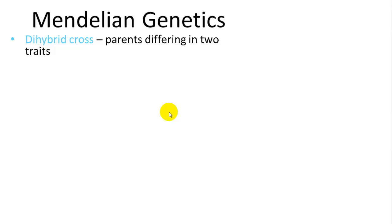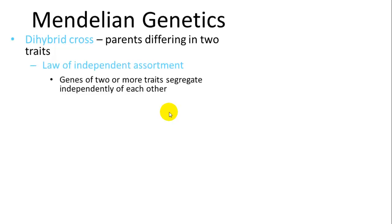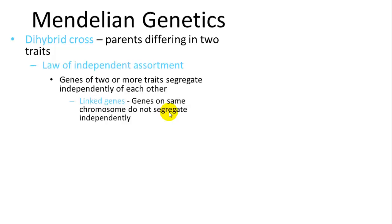The dihybrid cross looks at two different traits. Mendel's law of independent assortment states that those two traits are not associated with each other — they will independently segregate. So being tall doesn't mean you'll necessarily have green flowers. However, some genes are linked — those on the same chromosome are more likely to be associated with each other, and those do not apply to the law of independent assortment. Unlinked genes are found on different chromosomes and would segregate independently.